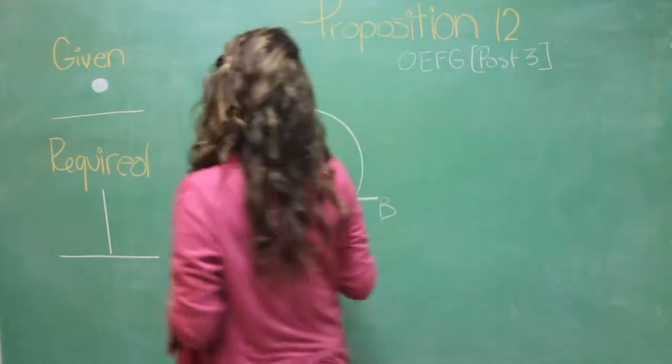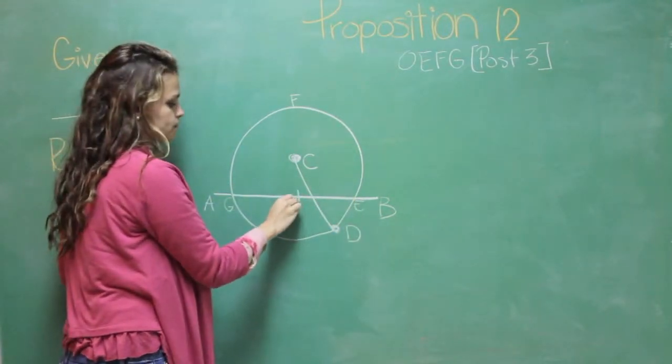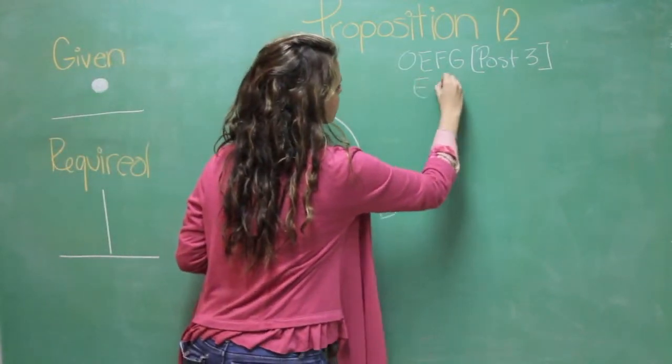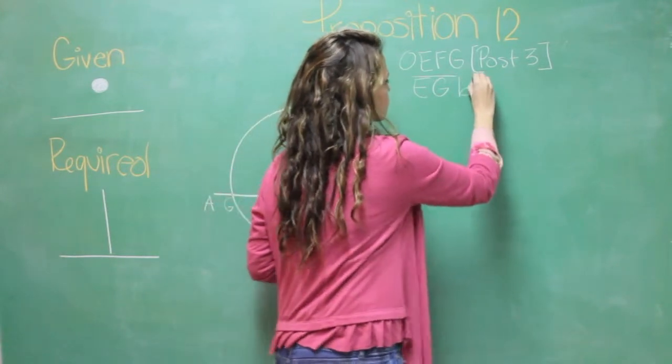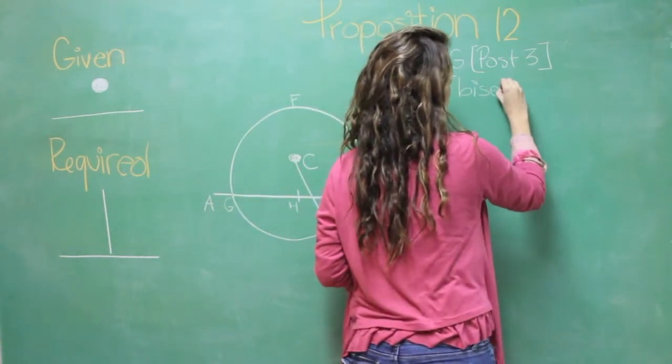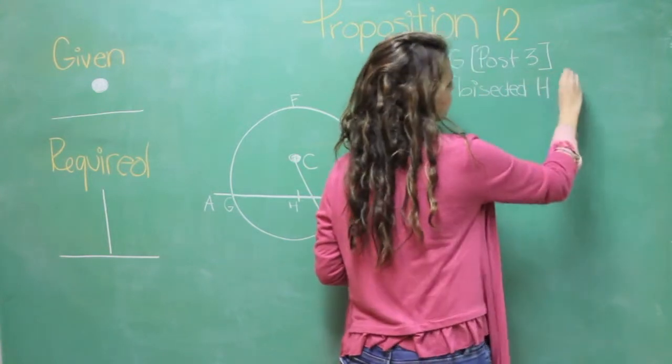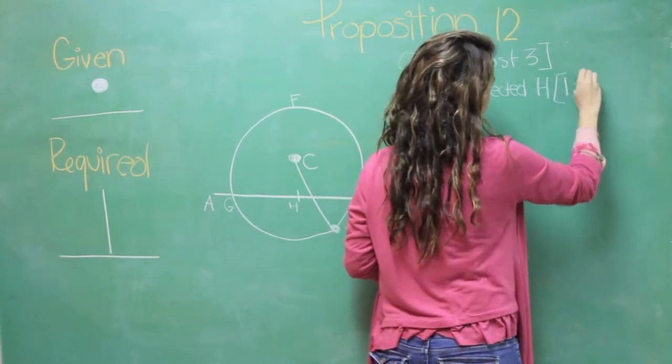Now, let E, G be bisected by H. We know this because of proposition 10.